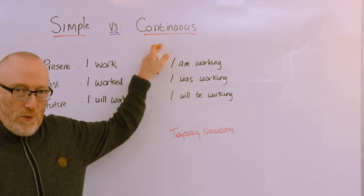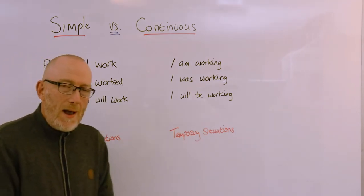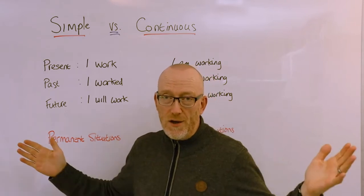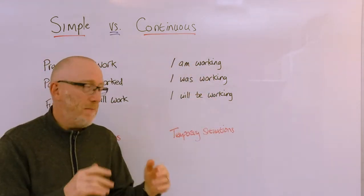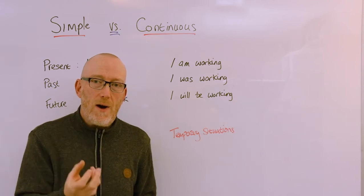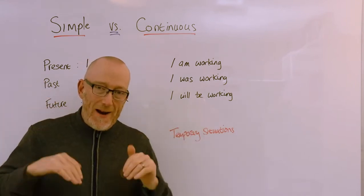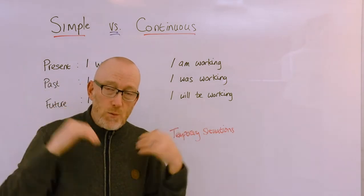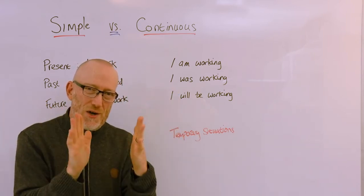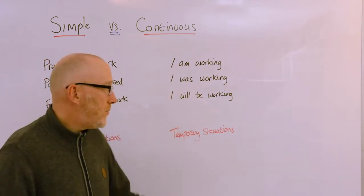When we use our continuous forms, these describe temporary situations — or another way to put it: short-term situations. Permanent equals long-term; temporary equals short-term. For example, in the present: "I am working" tends to describe the action you're doing right now. "I am recording a video" — that's what I'm doing right now. It started a few minutes ago and will end in a few minutes, so it's only short-term, a temporary thing.